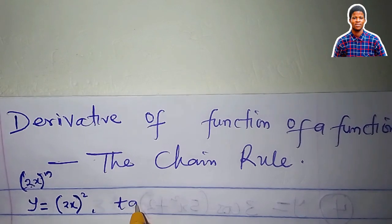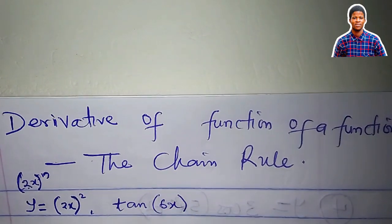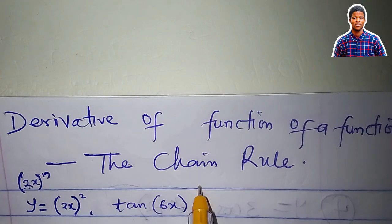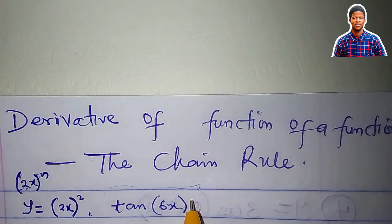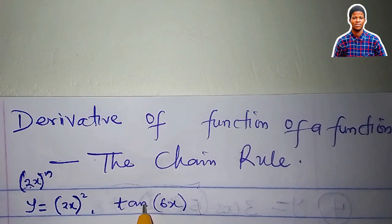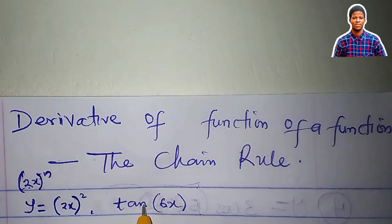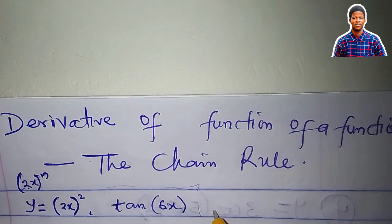Look at this: tan(6x). What you can see here is a trigonometric function, but the trigonometric function is made up of 6x, and 6x is an algebraic function. This makes it a function of a function.